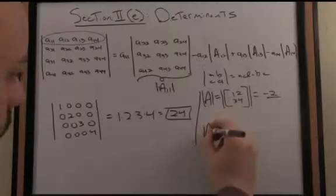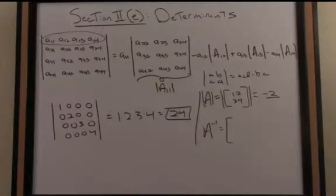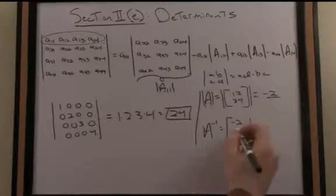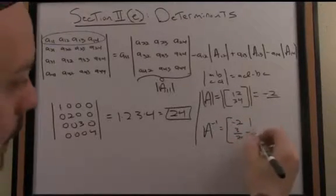I showed you previously that A inverse, in fact, looks as follows. It's the 2x2 matrix negative 2, 1, and 3 halves, negative 1 half on the second row.